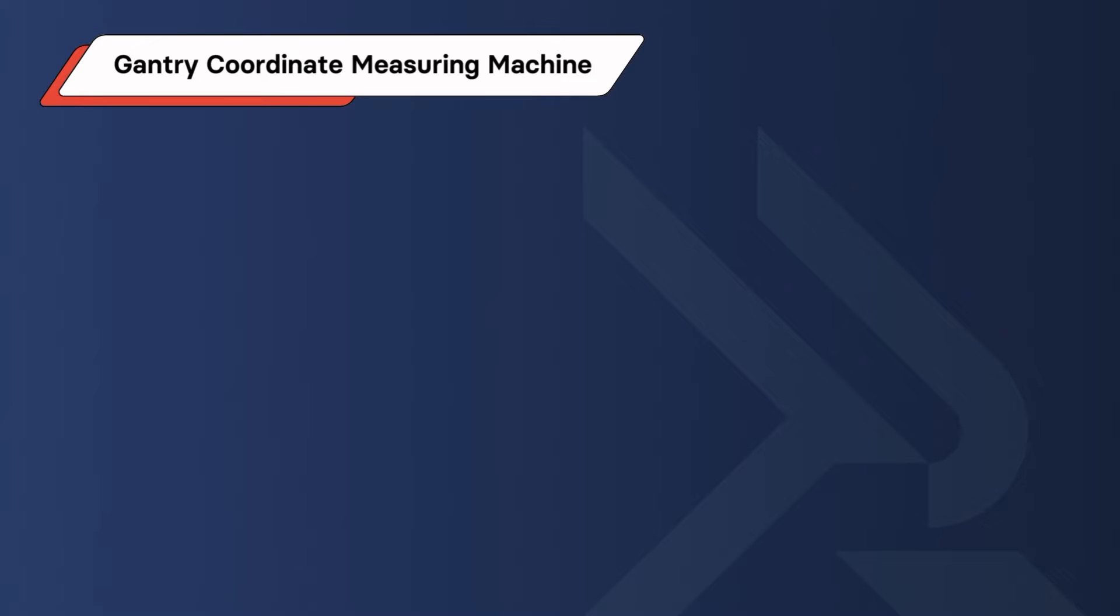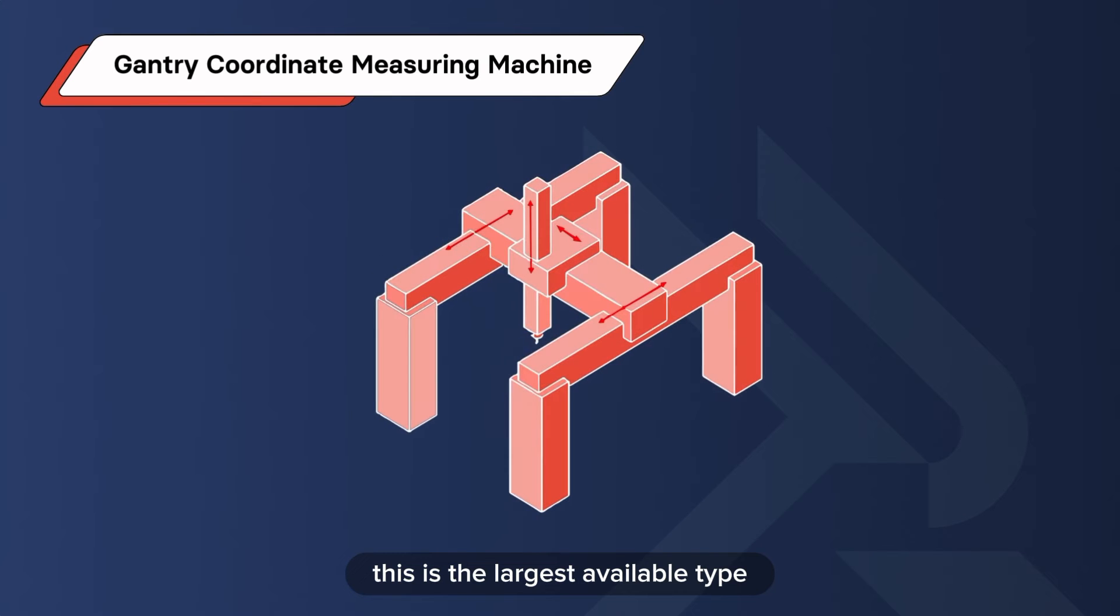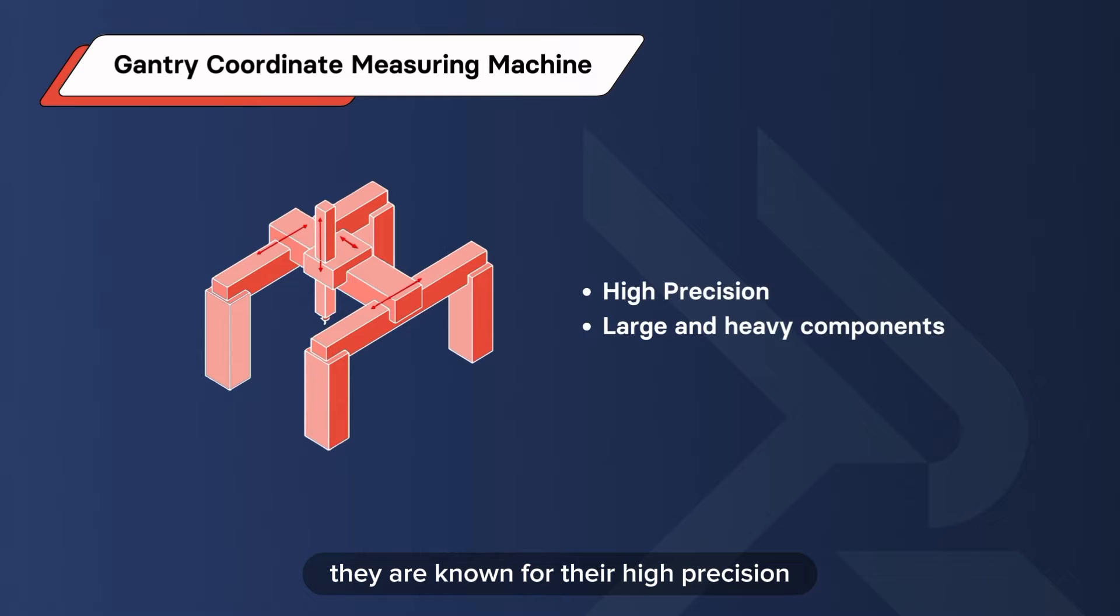Gantry Coordinate Measuring Machine. This is the largest available type. They are similar to bridge CMMs, but have an overhead gantry structure and use rail on both sides. They are known for their high precision and are often used for large and heavy components.